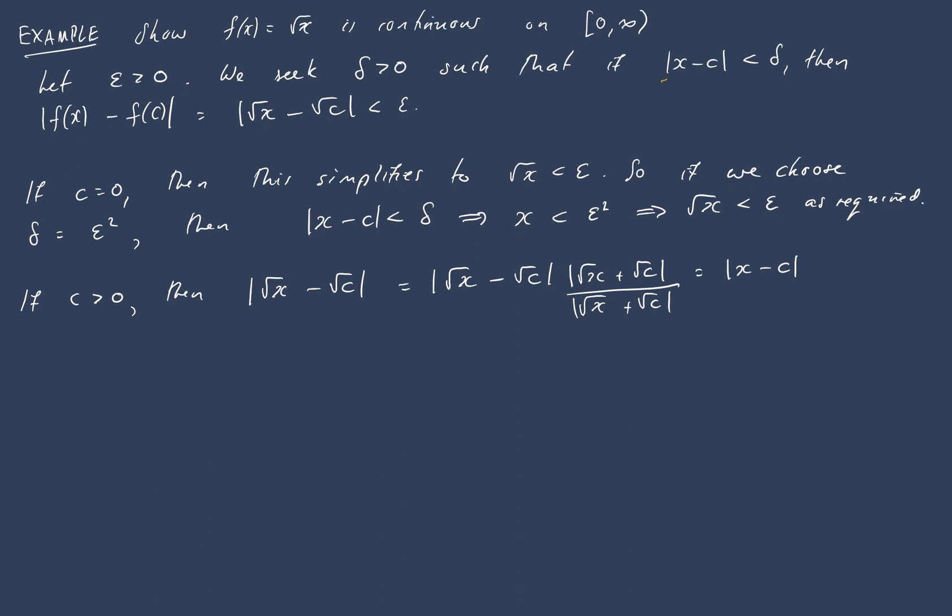And what that will give us is the absolute value of x minus c on the top of our fraction. And you'll notice that's kind of what we're aiming for, because we've got an x minus c in our delta expression. So that's going to be x minus c over root x plus root c.